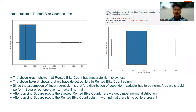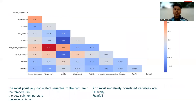The graph shows that rented bike count has moderate right skewness, and the box plot shows that we detected outliers in the rented bike count column. Since the assumption of linear regression is that the distribution of the dependent variable has to be normal, we perform a square root operation to make it normal. After applying the square root to the skewed rented bike count, we get an almost normal distribution with no outliers present. The most positively correlated variables to rented bike count are temperature, dew point temperature, and solar radiation. The most negatively correlated variables are humidity and rainfall.